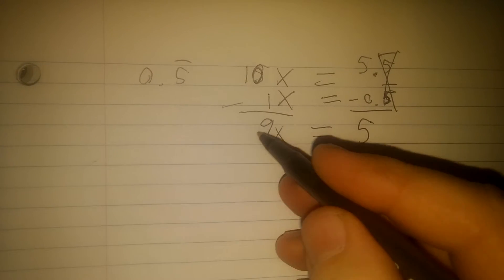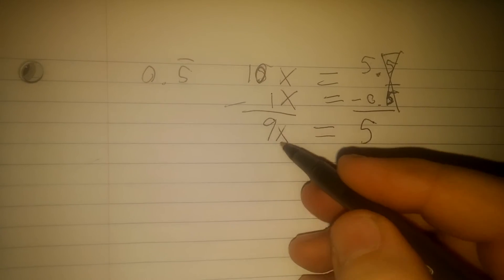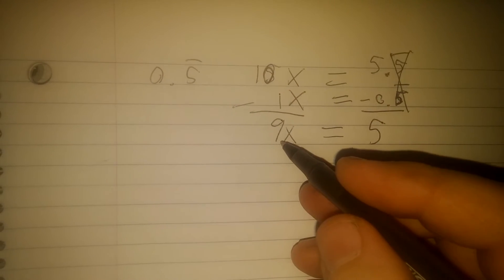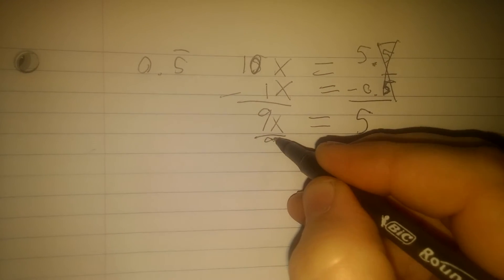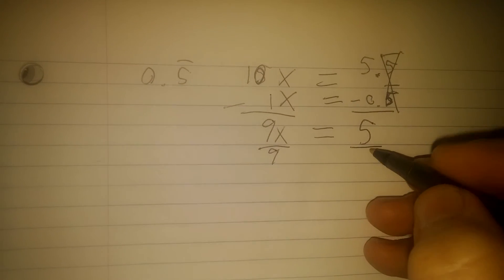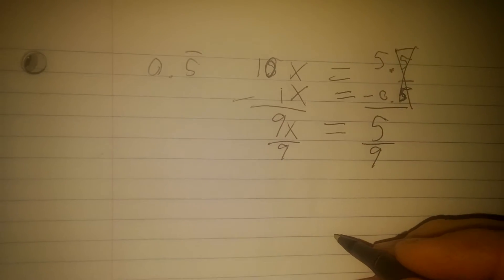Now, this is 9x's, which means this is 9 times too big. So I want to make it 9 times smaller, do the opposite of multiplication, divide it by 9, and I have to do the same thing to the other side.